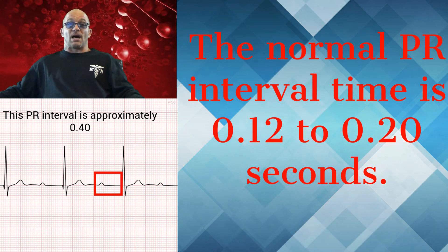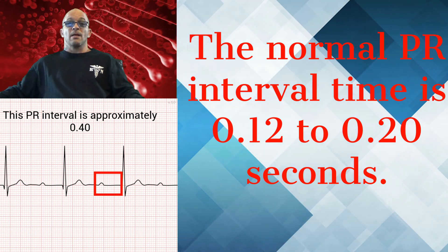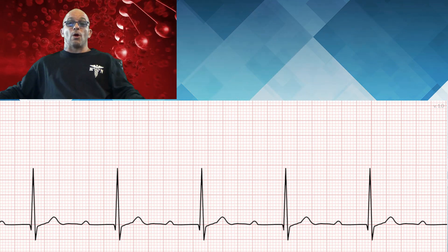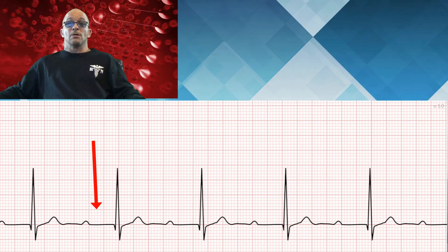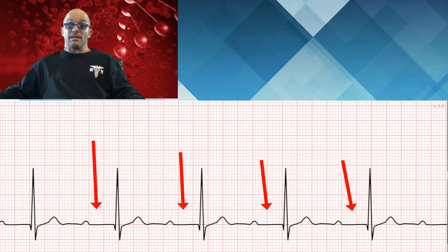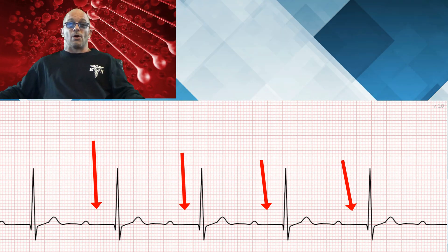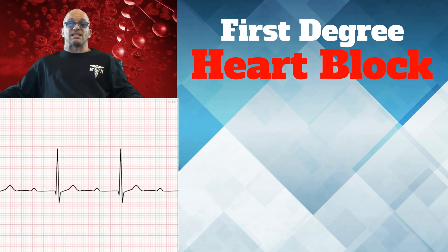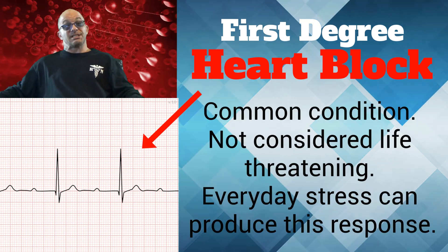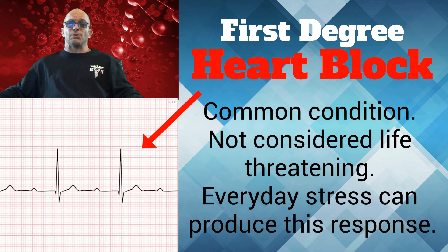The next abnormal EKG rhythm shows a prolonged PR interval. The normal PR interval time is 0.12 to 0.20 seconds. There are different problems that can occur with prolongation of the PR interval, so it is important to know if the prolongation is consistent. For consistent prolongation of the PR interval, we can label this rhythm as a first degree heart block, which is a very common condition and is not considered life threatening. Everyday stress can produce this response.